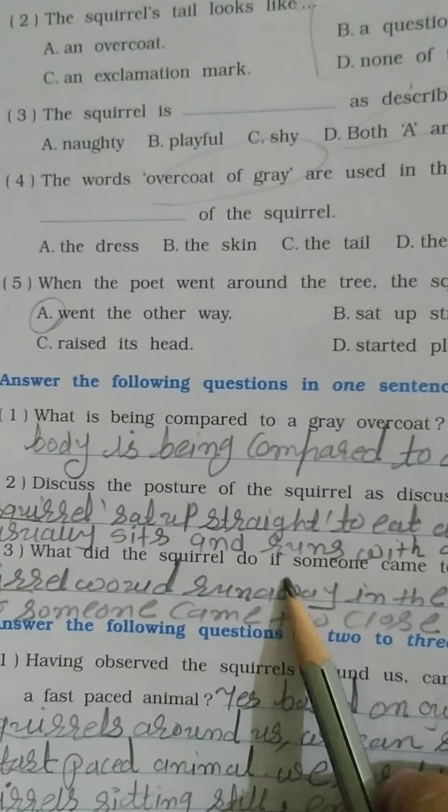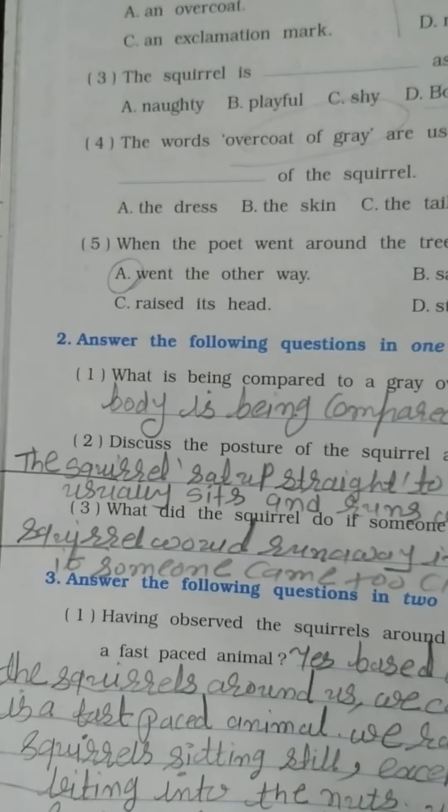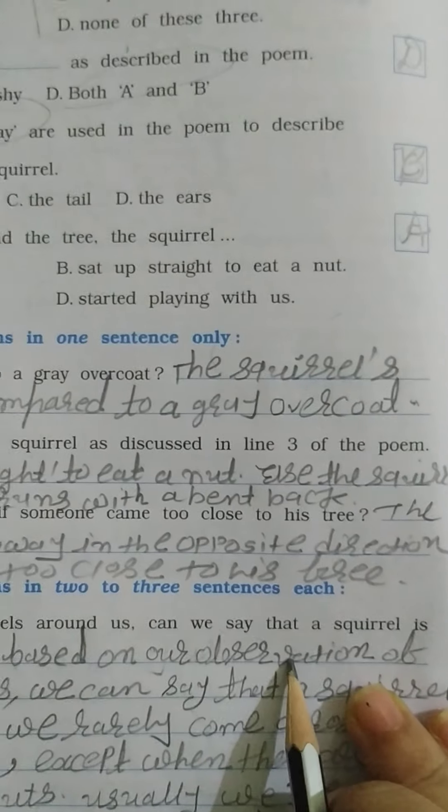What did the squirrel do if someone came too close to his tree? The squirrel would run away in the opposite direction if someone came too close to his tree.